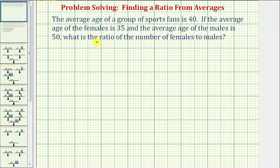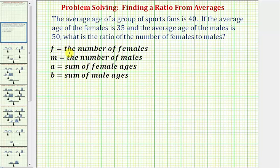We'll begin by defining the variables to represent the unknowns. For this problem, we'll have four unknowns. We'll first let f be equal to the number of females, m be equal to the number of males. And because we're working with averages, we'll let a equal the sum of the female ages, and b be equal to the sum of the male ages.